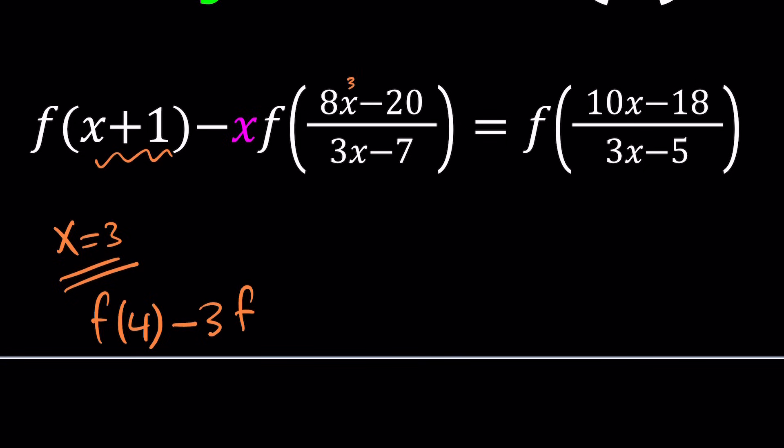Now if I replace x with 3, this gives me 8 times 3 minus 20, which is 24 minus 20, so that gives me a 4 in the numerator. And the denominator gives me 3 times 3 minus 7, which is 9 minus 7. That's a 2 in the denominator. So 4 divided by 2 equals 2. This is just going to give me 3 times f(2). See? That was simple, right?